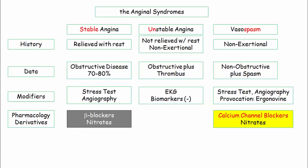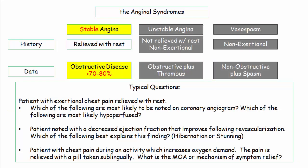For coronary vasospasm, calcium channel blockers are the treatment of choice — any agent within the class may be used. On the boards, there are only a limited number of questions where you're expected to know a specific treatment; this is one of them. That concludes the content section of this presentation. On the next few slides, we'll review typical questions on the anginal syndromes.